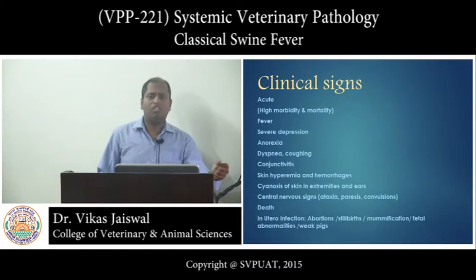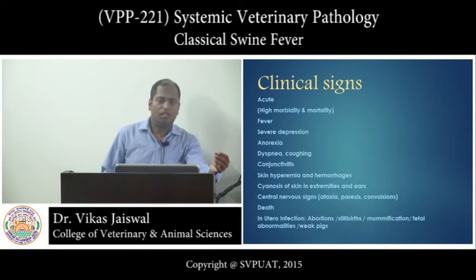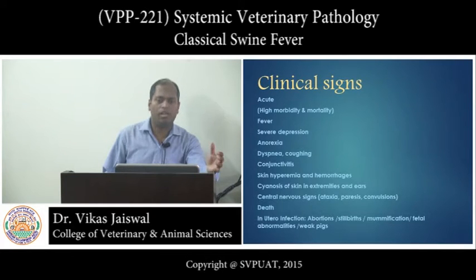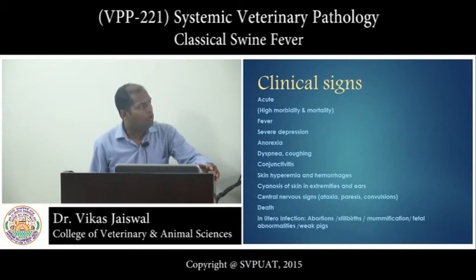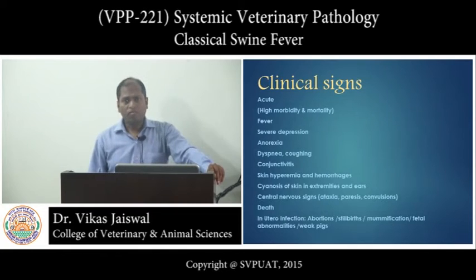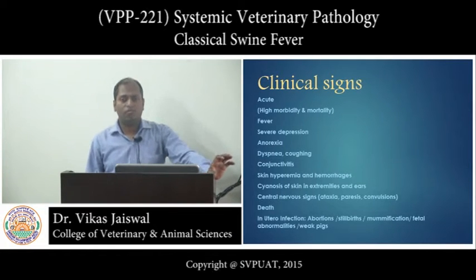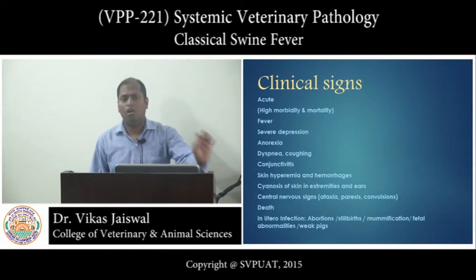Basically, the virus affects three systems: the immune system, endothelial cells, and epithelial cells. When the virus affects endothelial cells, it causes damage to the endothelium; thrombocytopenia takes place, which leads to disseminated intravascular coagulopathy and hemorrhages may result. The virus takes entry by mucosal membrane and primarily the replication of virus takes place in the tonsillar epithelium. After replication, it goes to the regional lymph node and viremia takes place within 16 hours of infection.